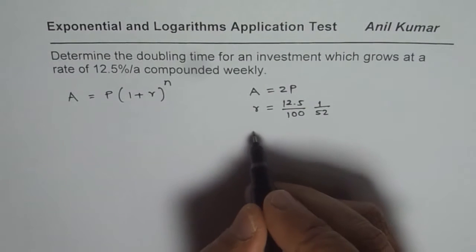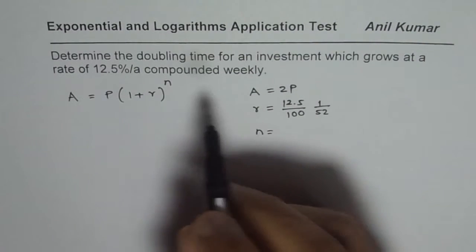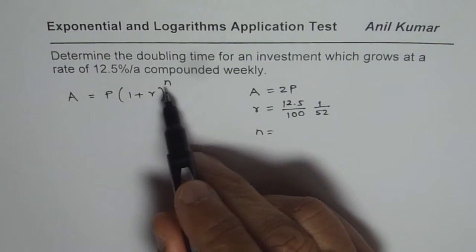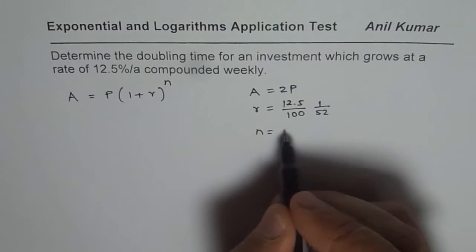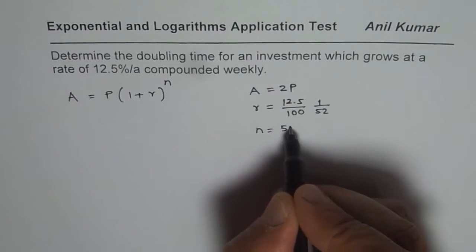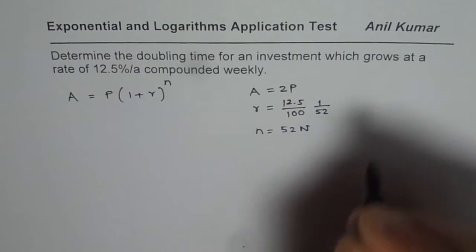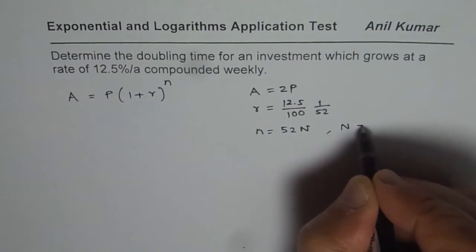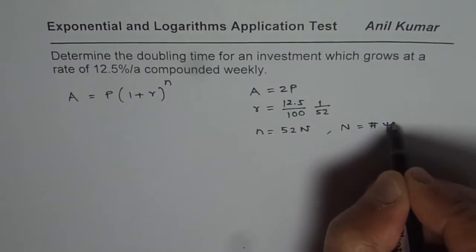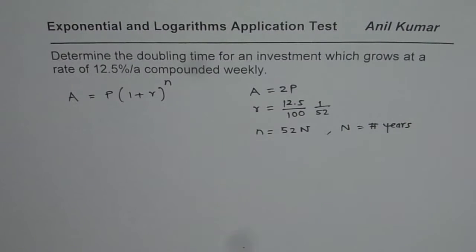And n will be equal to the number of compoundings done, which will be 52 in one year. So 52 times n number of years. Here n is the number of years. That is how we can actually write down our equation.